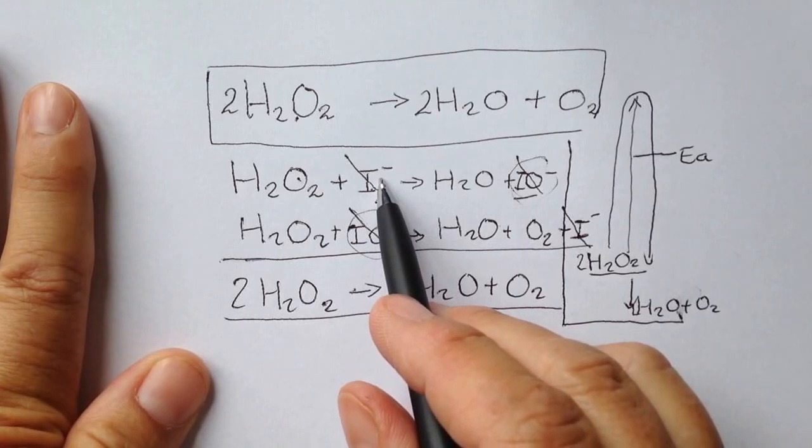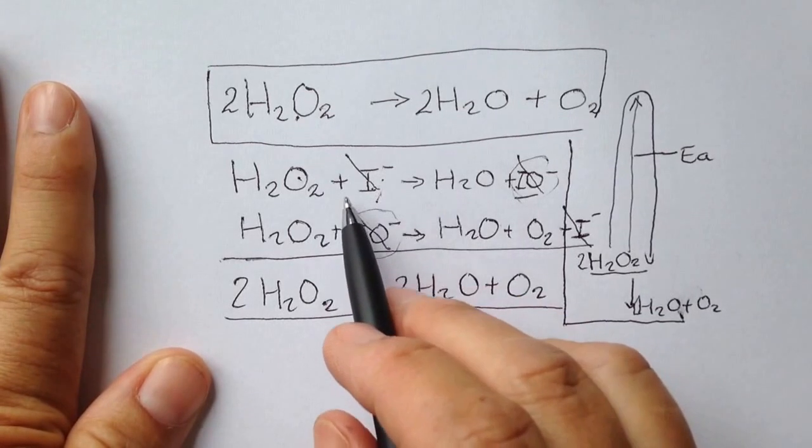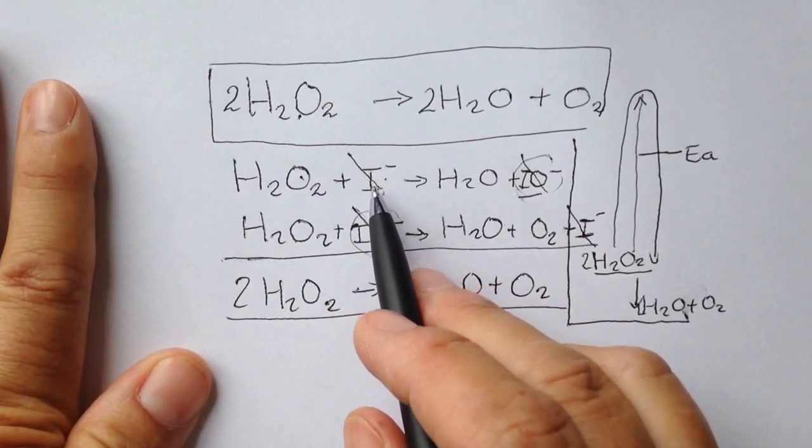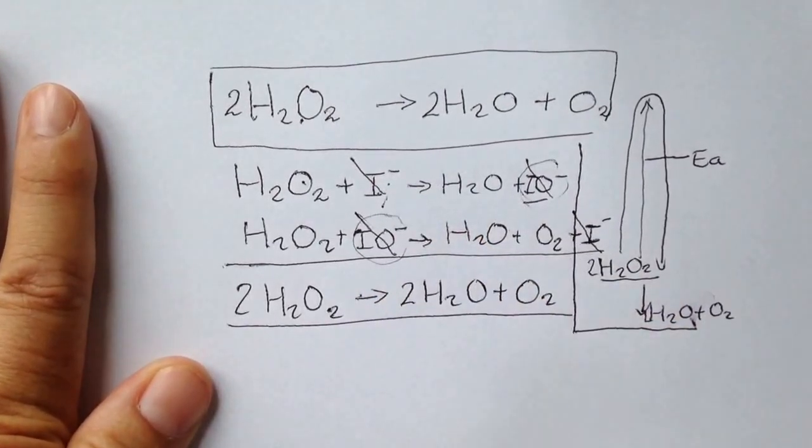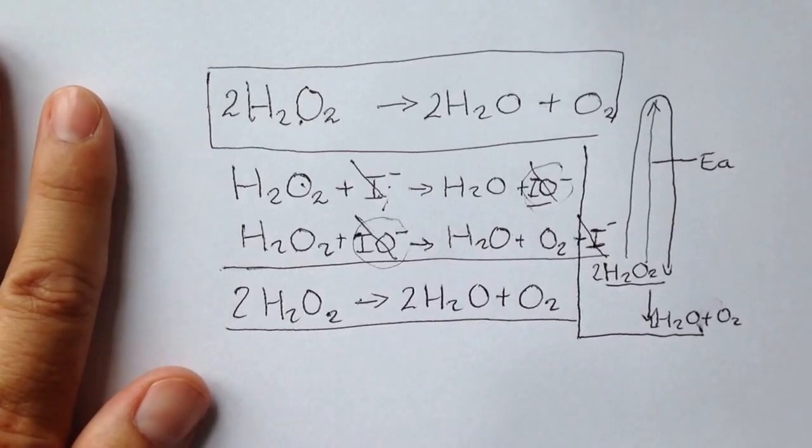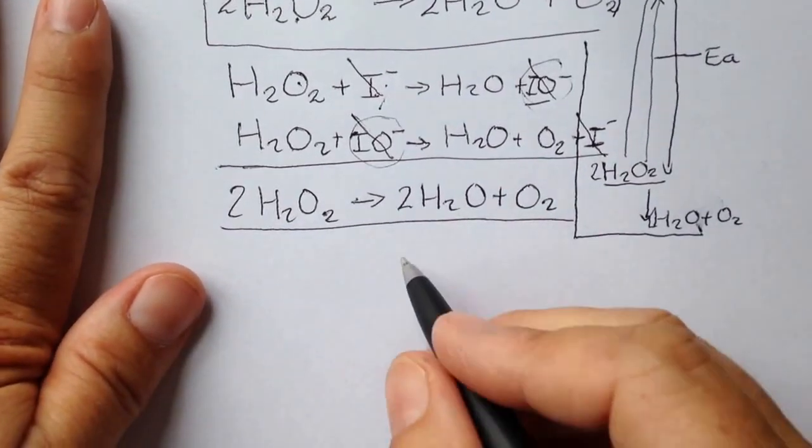The iodide ions are behaving as a catalyst because they appear in the first step and the second step, but they get regenerated. They're not chemically changed. So we see the catalyst reduces the activation energy.